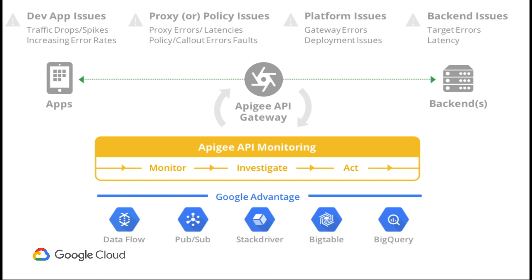The second feature is alerting itself. As of today in API monitoring, you can configure alerts based on a fixed value. And this year, we launched a new beta feature called Anomaly Detection, where you can take alerting to the next level.